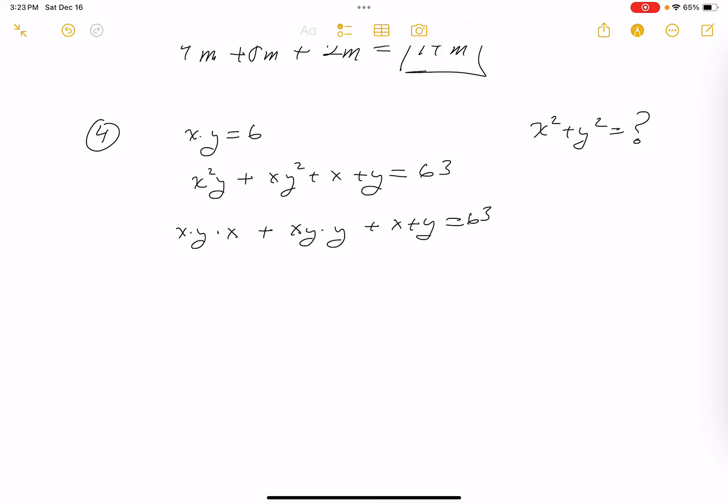So what do you get? xy is 6, that's 6x. xy is 6, that's 6y, plus x plus y equals 63.